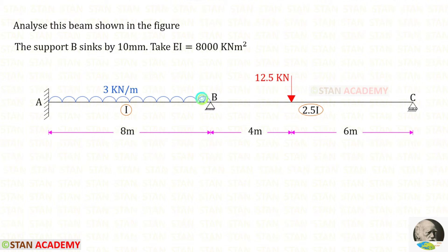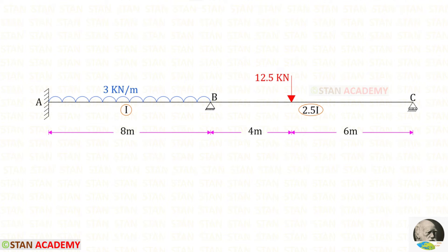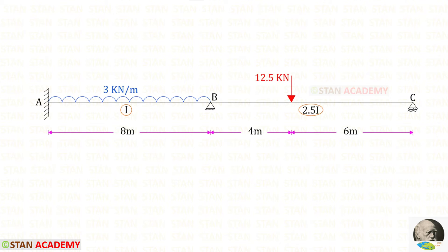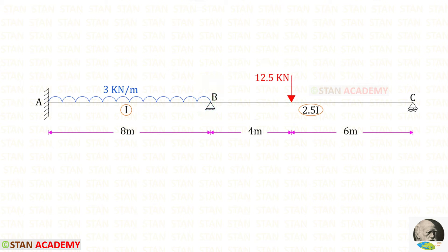In this beam, the support B sinks by 10 millimeters. The flexural rigidity EI is given as 8000 kilonewton meter squared. There are two spans: span AB and span BC. In span AB, there is a uniformly distributed load of 3 kilonewton per meter acting for the whole span. In span BC, there is an eccentric point load of 12.5 kilonewton acting at a distance of 4 meters from support B. The length of AB is 8 meters with moment of inertia I, and the length of BC is 10 meters with moment of inertia 2.5I.